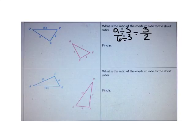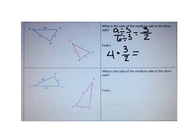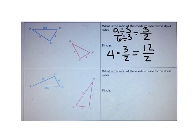So I know that the medium side will always be 3 over 2 times the short side. The short side is 4, and I can multiply 4 times 3 halves to find n. First, what's 4 times 3? It's 12. When I multiply a whole number by a fraction, the denominator stays the same, so it's 12 over 2. I can divide 12 by 2 to find n. n is 6. 6 is 3 halves times as much as 4.